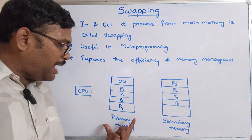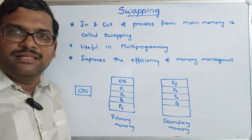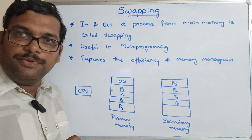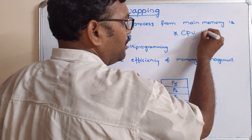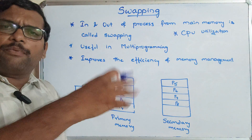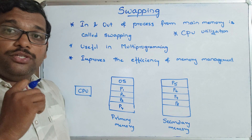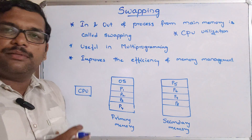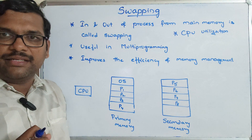Now, primary memory is very less in size, so it can accommodate only four processes — let's imagine those four processes are being executed by the CPU. Swapping also improves CPU utilization, which is very important. In multiprogramming there will be multiple processes being executed, and we should not keep the CPU idle because the processor's job is to execute all these processes. We must not let the CPU go into an idle state.